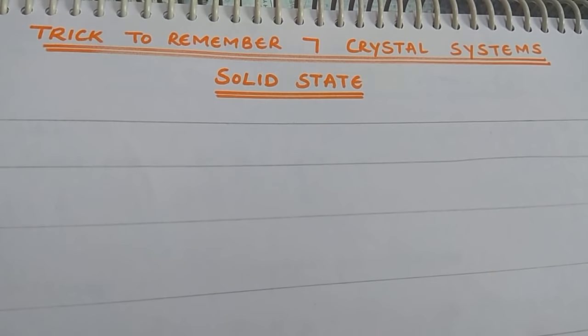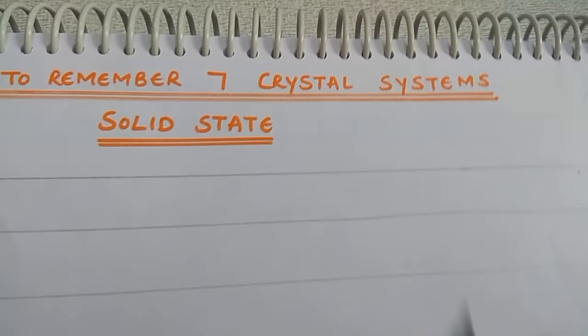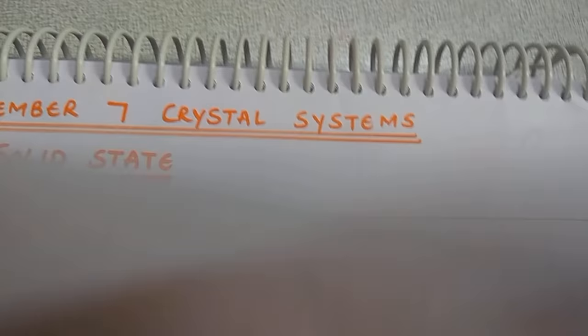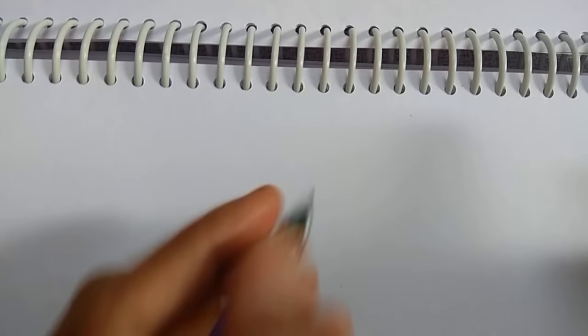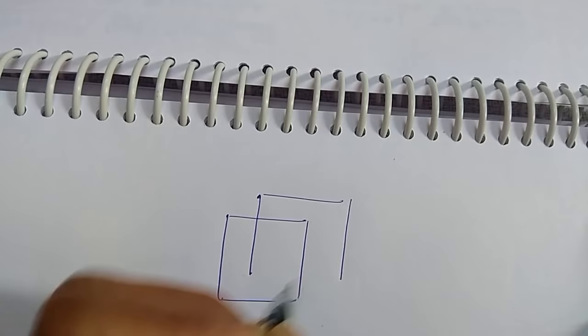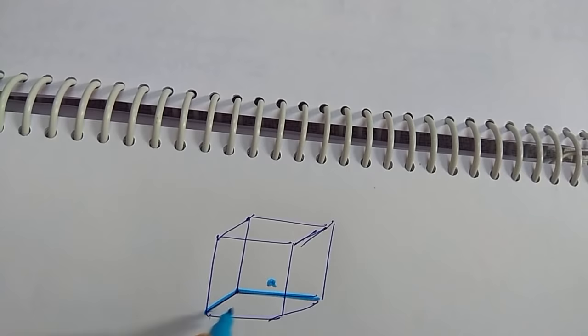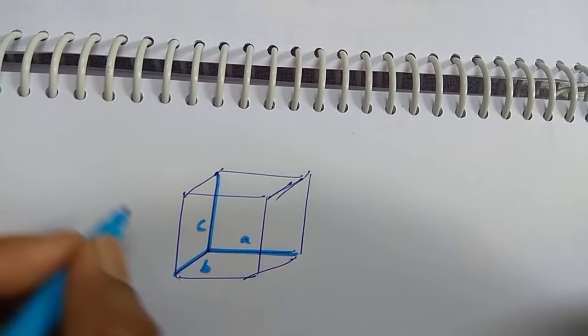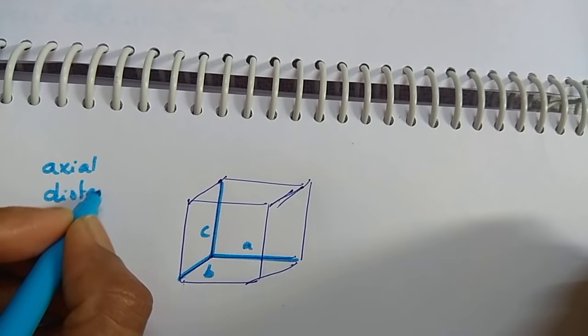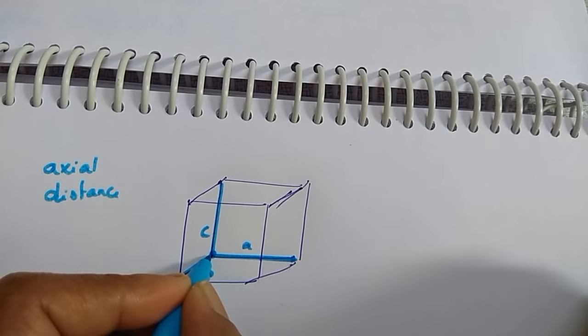Let us take one unit cell — a 3-dimensional unit cell. We name the three edges A, B, and C. These three are called axial distances. The distance between two atoms along each edge is one axial distance, and there are three axial distances in total.